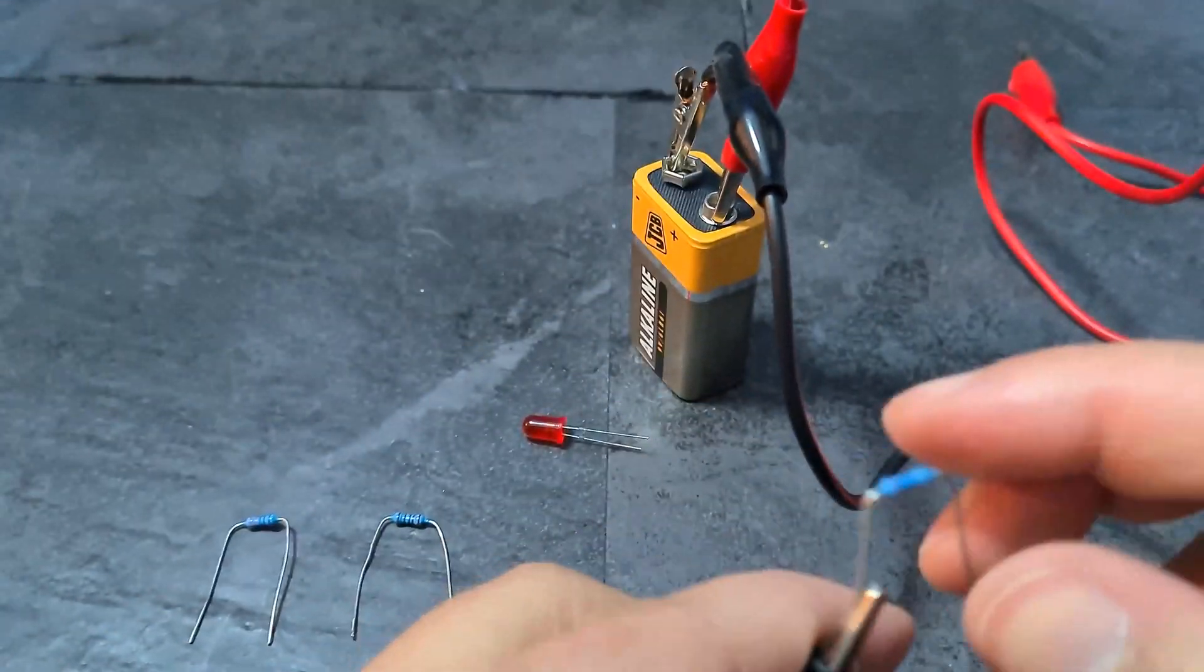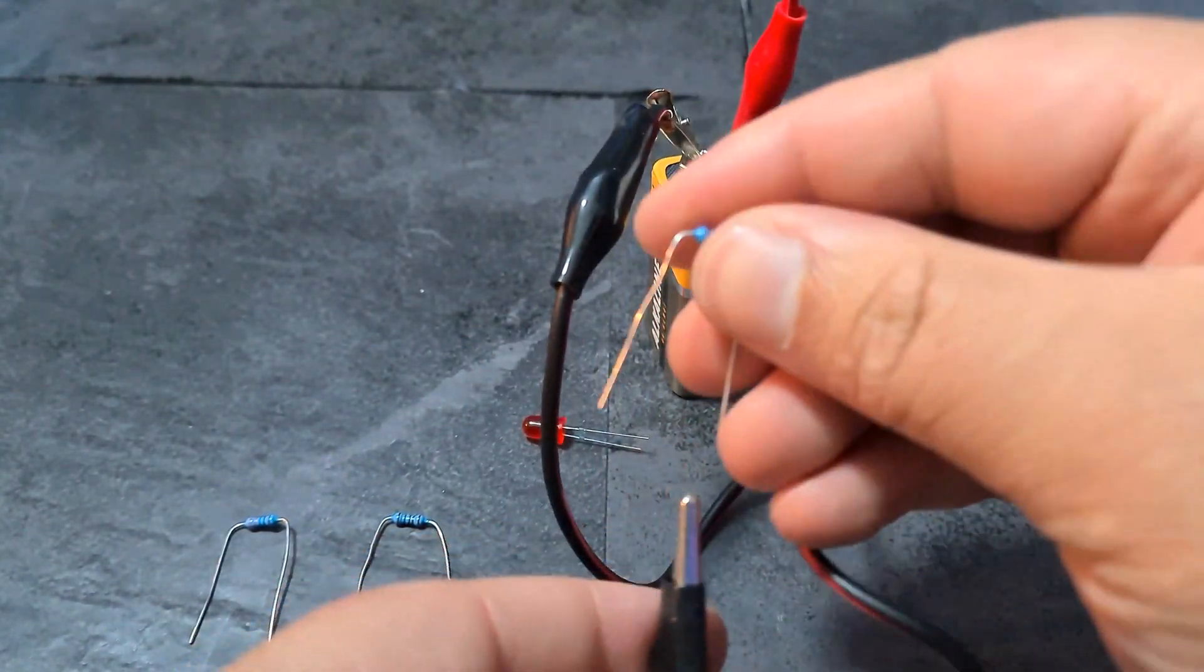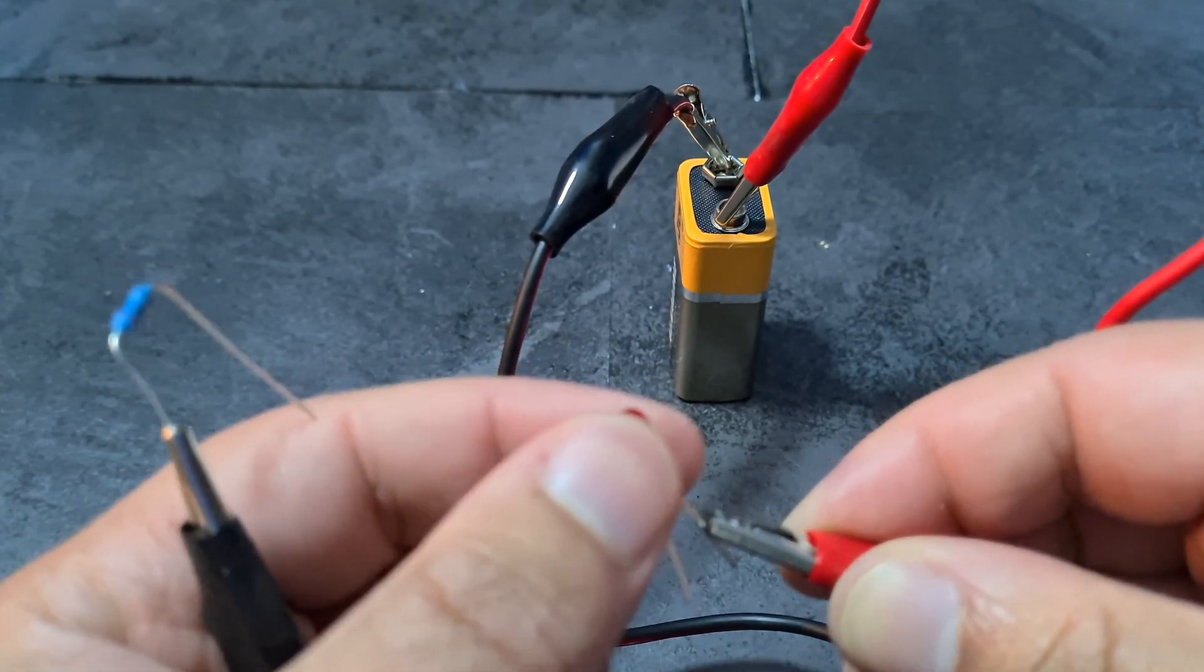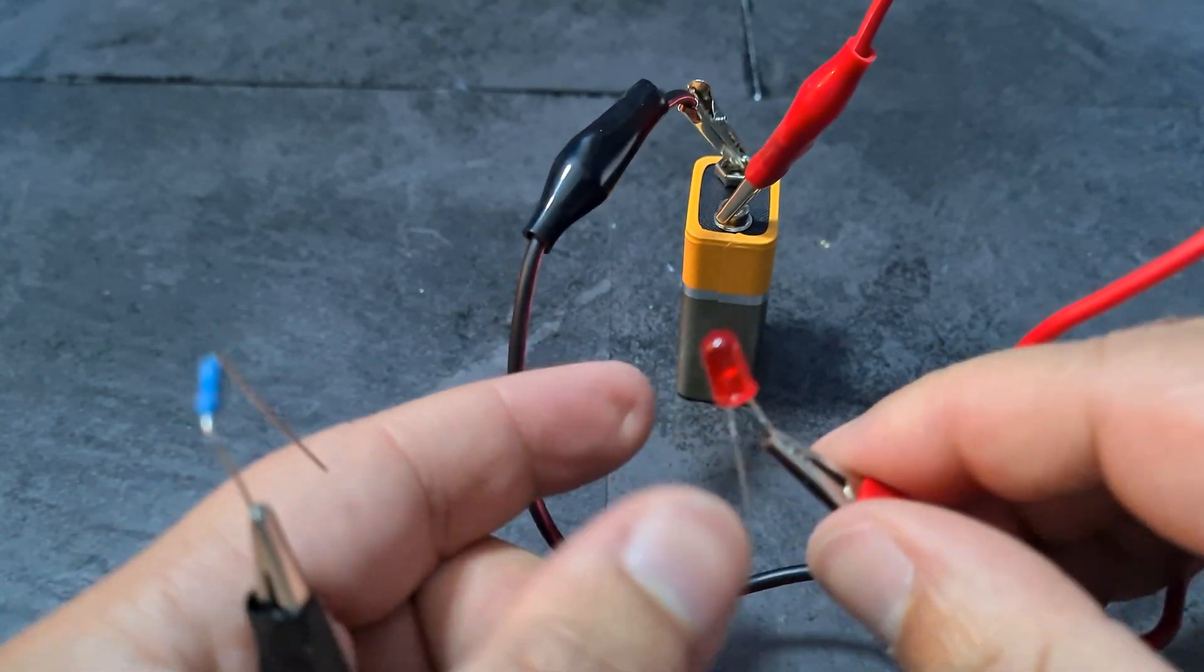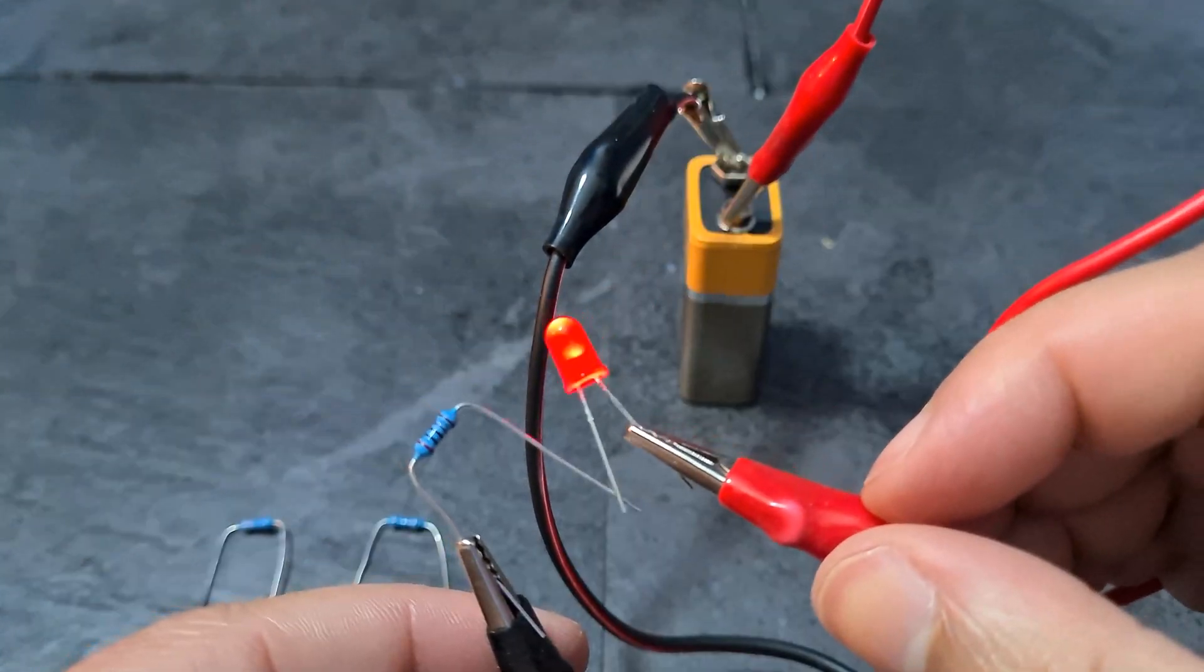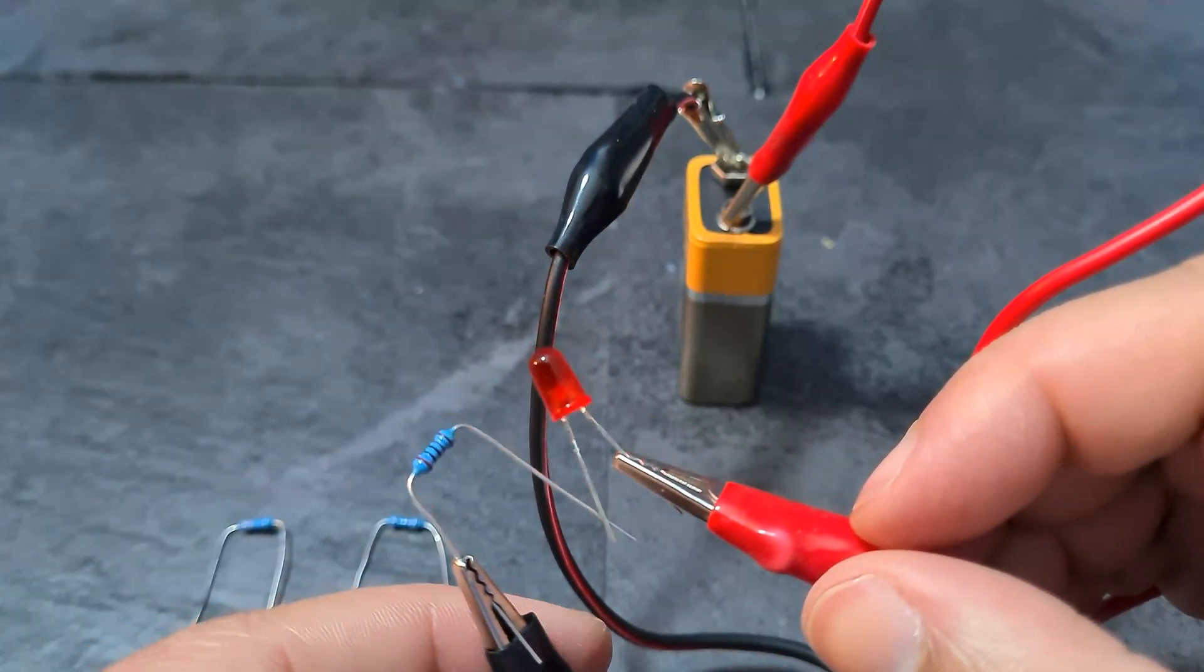And then positive, we're going to connect it to the longer end of the LED. Okay, and then now all we need to do is just touch these, and we'll see our LED is going to turn on. Simple, right?